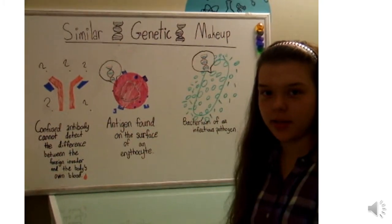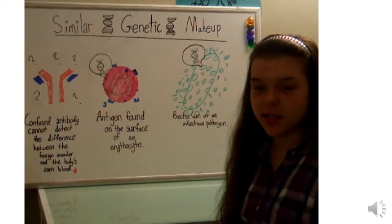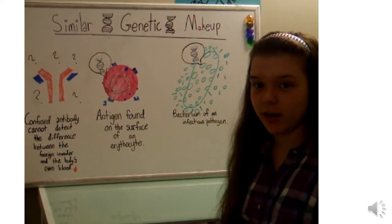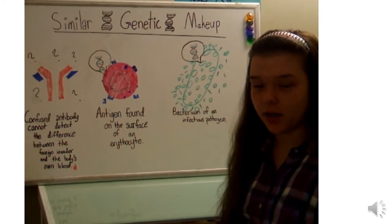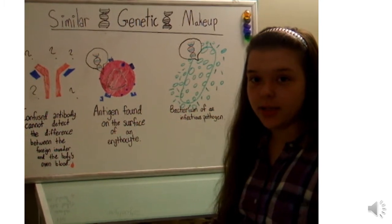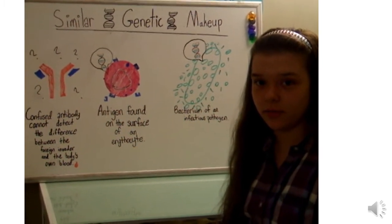For instance, people who have type A blood seem to be more susceptible to contracting smallpox, while those with type B blood seem more susceptible to being affected by E. coli.